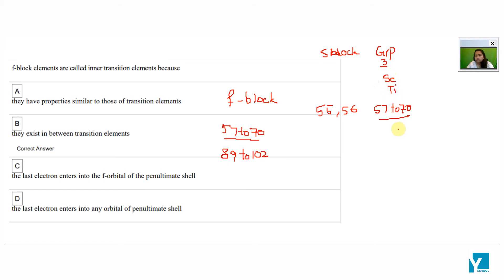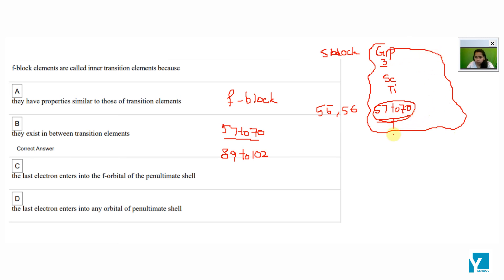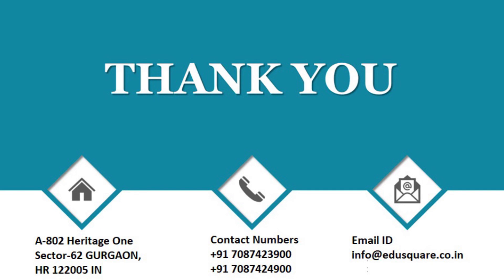Scandium and titanium — the f-block elements sit in-between the d-block elements.